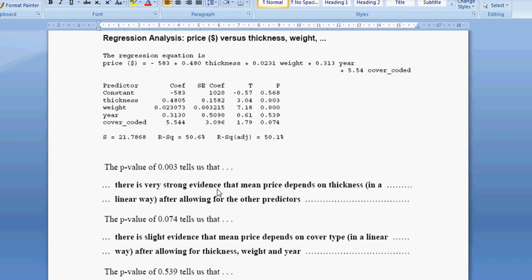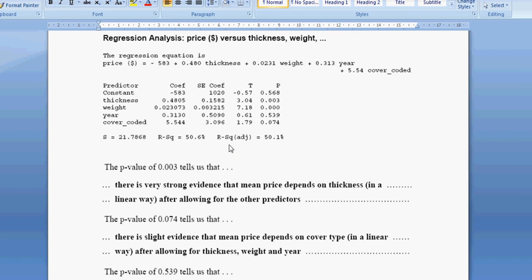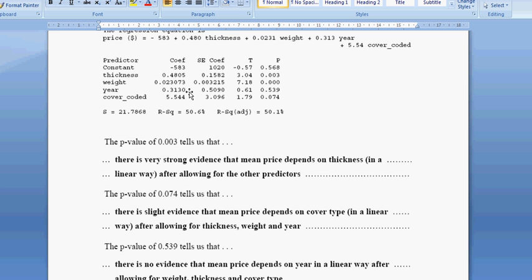there's very strong evidence that there is a relationship. And to say that there is a relationship, all you say is that the mean price depends on thickness in a linear way, because it's a linear relationship, after allowing for other predictors. You could probably just say this bit here and get a 6, this little bit here is just for your 7 sort of thing.